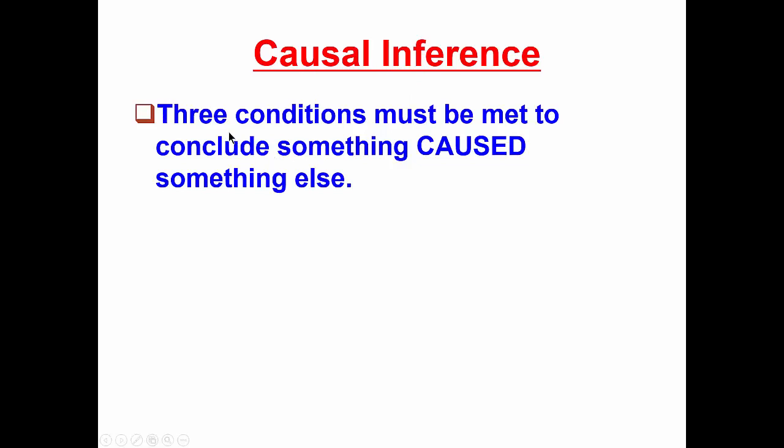Let's also consider another trio that helps us draw causal inferences. There are typically three conditions that must be met to conclude something caused something else. The first is counterintuitive to a lot of students, and this is correlation.